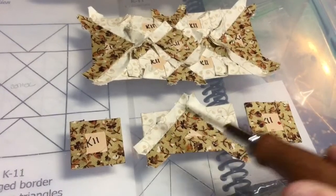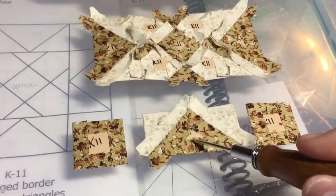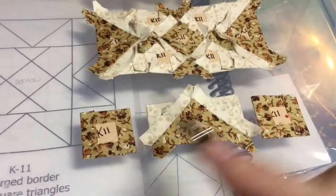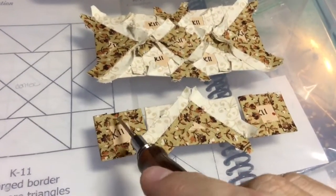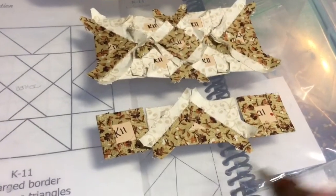So I've got my bottom row flying geese unit assembled with my squares basted and now I'm just going to attach each square to each side so I can complete this row.